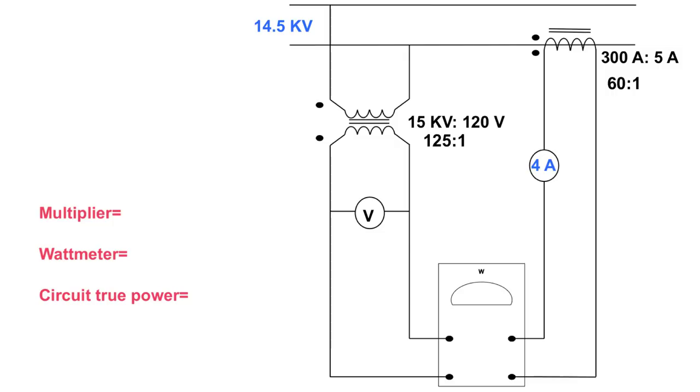What we have then is our multiplier. We're going to take 125 times 60 to get our power multiplier. And that gives us a multiplier of 7500. There's no unit behind that, it's just an actual multiplier.